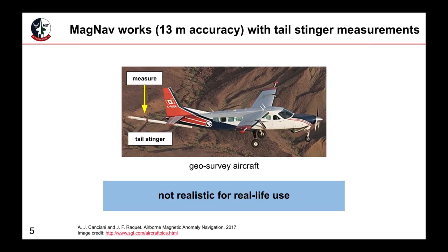As mentioned, a geosurvey aircraft can take measurements on a tail stinger, far away from most of the aircraft's magnetic interference. Using these measurements, Conciani has shown that navigation accuracies of tens of meters are possible. However, this type of setup is not realistic in practice.